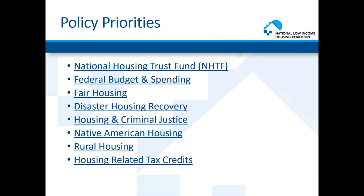On the federal budget and spending, for fiscal year 2020 we're asking legislators to fund USDA and HUD programs at the highest levels possible. These programs have been chronically underfunded for years. On fair housing, we support HUD's Affirmatively Furthering Fair Housing rules issued in 2015 and will continue to counter the current administration's efforts to weaken fair housing policies, including opposing HUD's proposed rule on disparate impact, which would make it easier for local governments to perpetuate segregation.